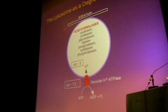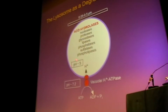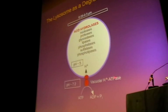The lysosome is a degradative organelle. It's filled with a whole series of enzymes that degrade things. All of these enzymes have an acid pH optimum, so the pH of the lysosome is actually maintained around pH 5 by a proton pump.